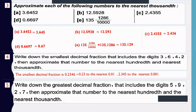Example 4: write down the smallest decimal fraction using digits 3, 6, 4, and 2, then approximate to the nearest hundredths and thousandths. For the smallest, write digits in ascending order after the decimal point: 0.2346. To the nearest hundredths: hundredths digit is 3, next digit is 4 — less than 5 — cancel it — approximately 0.23.